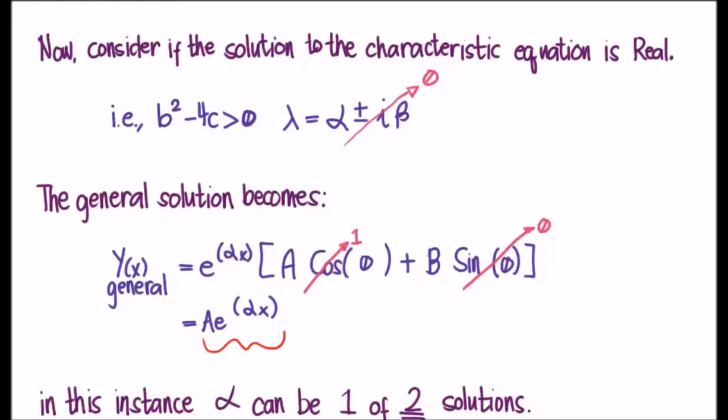Now, there's a bit of a subtlety here. I said we always have to have two particular solutions in order to make the general solution. So in this case, it looks like the general solution only has one particular solution. So we have to do a bit of a sleight of hand.